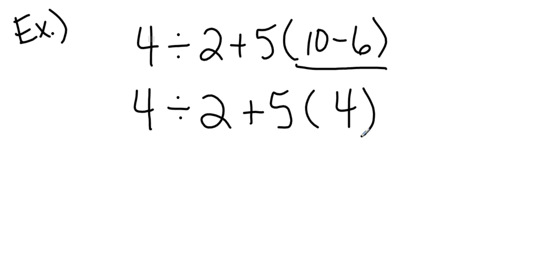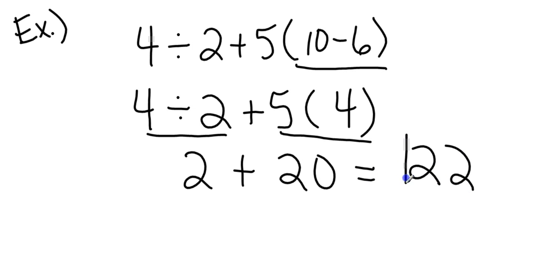Now I have division and multiplication. Division, multiplication are at the same level, so I go ahead and do both in order from left to right. 4 divided by 2 is going to give me 2. I'm also going to add to it 5 times 4, which gives me 20. Go ahead and perform my addition, 2 plus 20. Final answer is going to be 22.